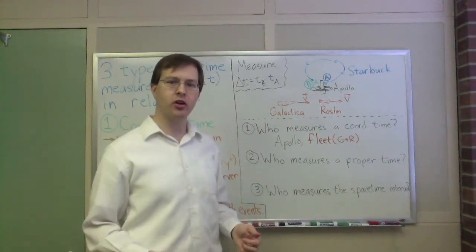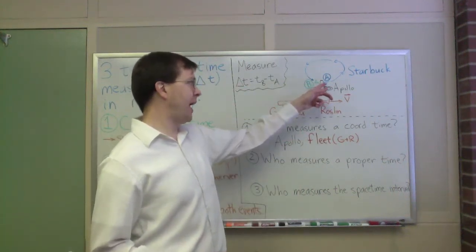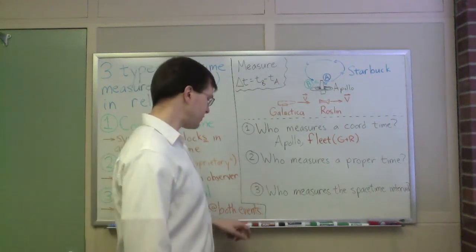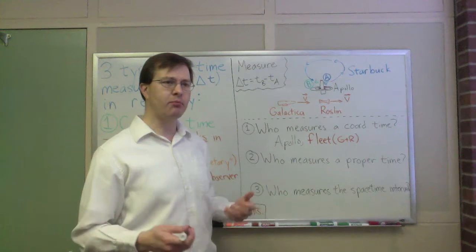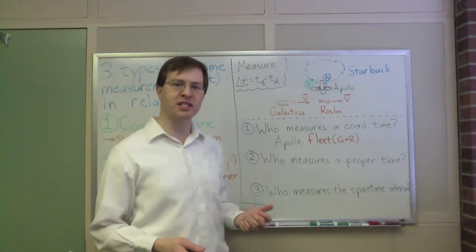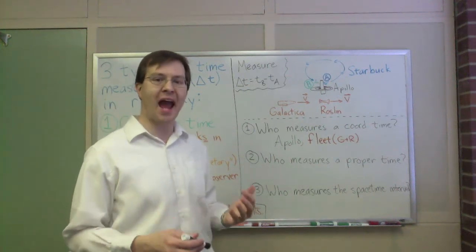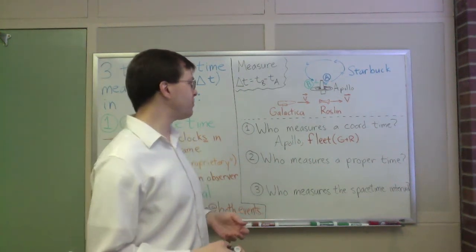Okay, next question. Who measures a proper time between A and B, between Starbuck's departure and Starbuck's arrival? Well, proper time, remember, is time measured by a specific observer, elapsed time for a specific observer, someone who is present at both events. Who's present at both events?